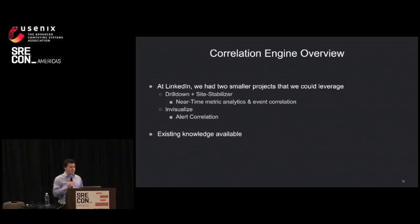At LinkedIn, we actually had two smaller projects that we could leverage in building this event correlation system. These were more or less side projects, but they had shown a lot of promise. First was what we call Drilldown and Site Stabilizer, which does near-time metric analytics, which I'll talk about in a second, and it also does event correlation. So it looks at what deployments happened in the same time period, what AB experiments were changed, et cetera. And then we have Invisualize, which does alert correlation.